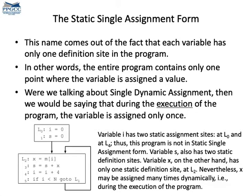So, what's the meaning of the name SSA form? Basically, it means that each variable has just one assignment location in the program. That's the meaning of "static" in the name. Notice that this location can be executed multiple times. For instance, at the bottom of the figure, variable i and variable s both have two assignment locations. i is assigned at L0 and at L4. Variable x, on the other hand, has just one assignment site, so it is in SSA form.